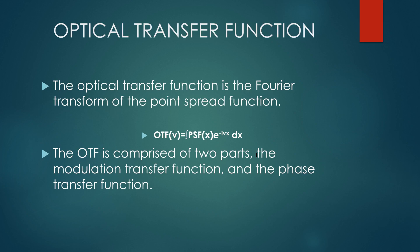The reason we don't use the point spread function is that it is tedious to work with due to convolution. So we take the Fourier transform of it and we get the optical transfer function which is free of convolution.